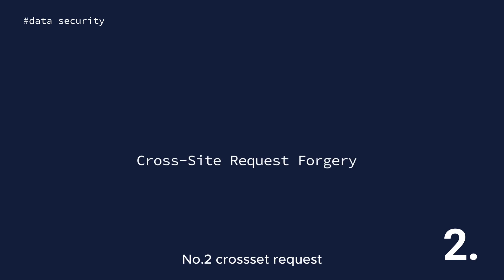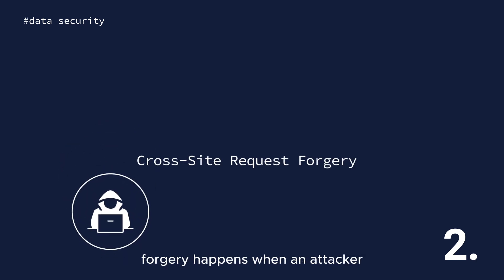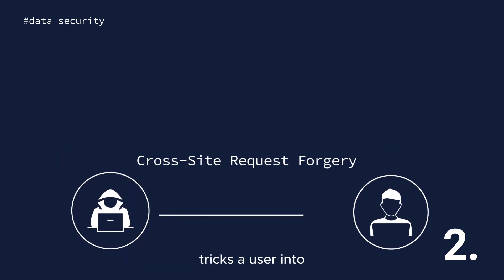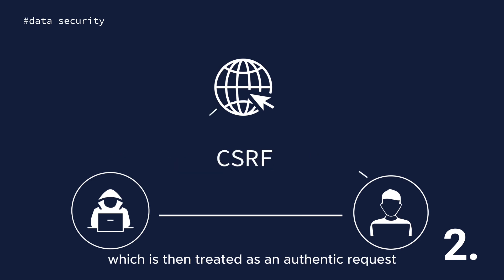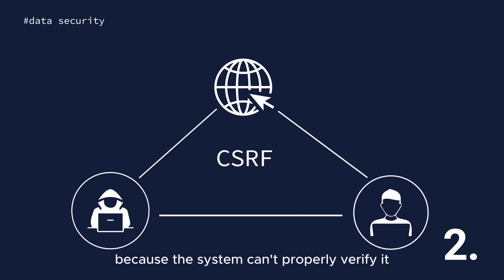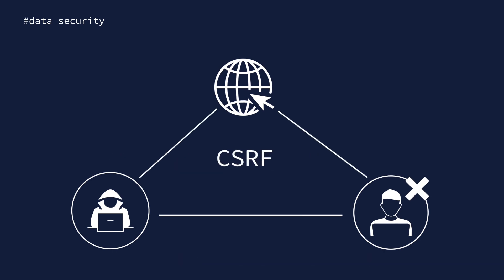Number two: cross-site request forgery happens when an attacker tricks a user into making an unintentional request to the web server, which is then treated as an authentic request because the system can't properly verify it.